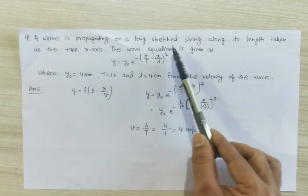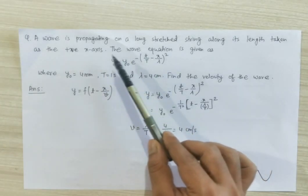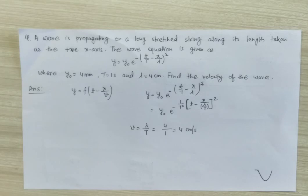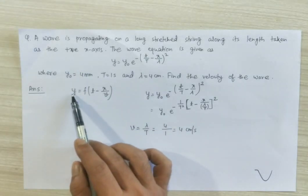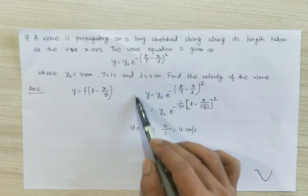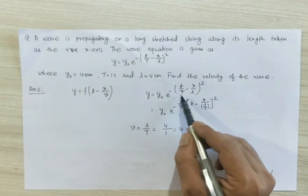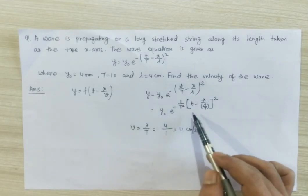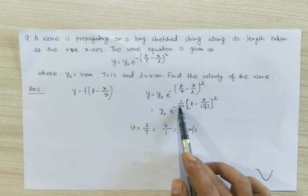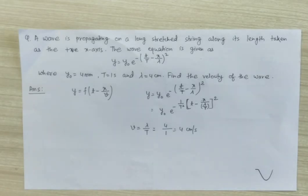Let us see one example. A wave is propagating on a long stretched string along its length taken as the positive x direction, and the wave equation is given along with some data. The question asks to find the velocity of the given wave. Since the wave is moving along positive x direction, its equation y is a function of t minus x by v. We convert the given equation into the form f(t minus x by v) — taking capital T outside gives t squared — and by comparing with the standard form, v equals lambda divided by T. So the speed of the wave is v equal to lambda by T. Thank you.